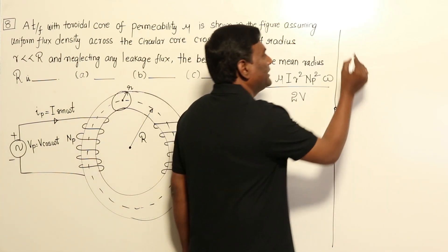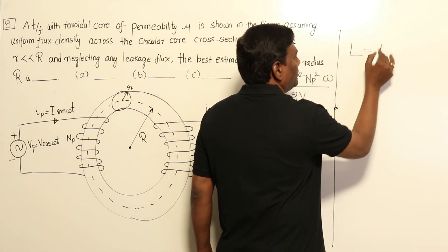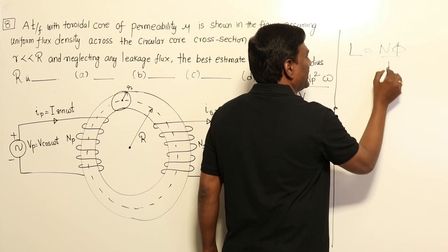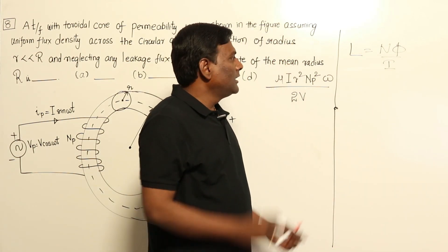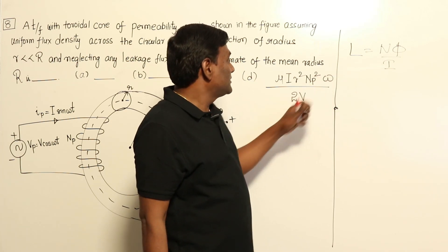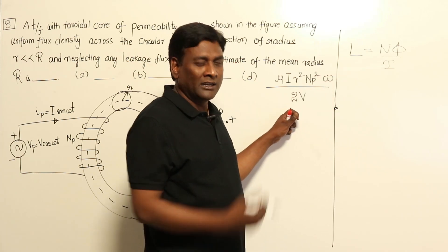We remember that L = Nφ/i, that's it. We don't have anything else. Now from here let us try to get the answer.